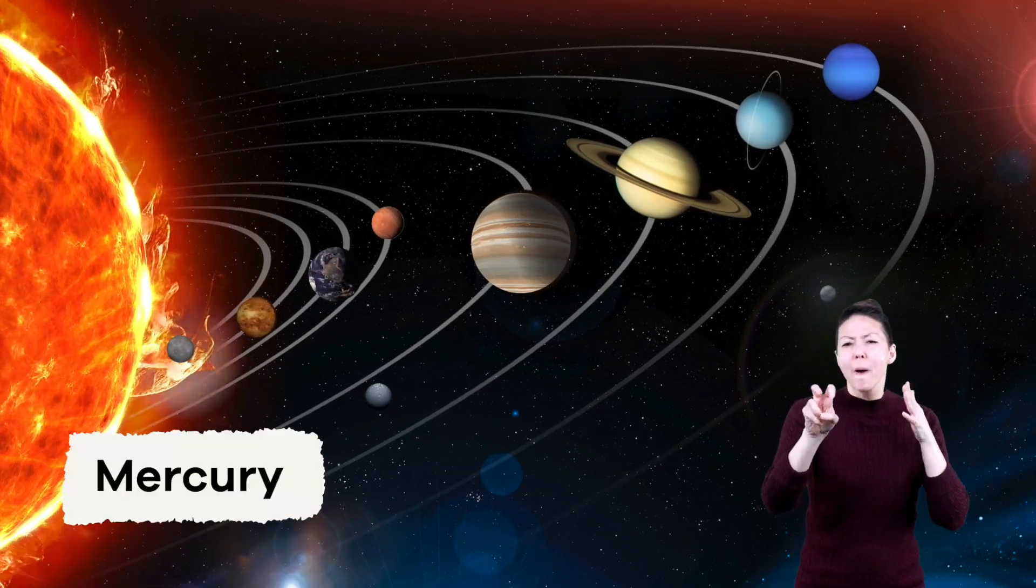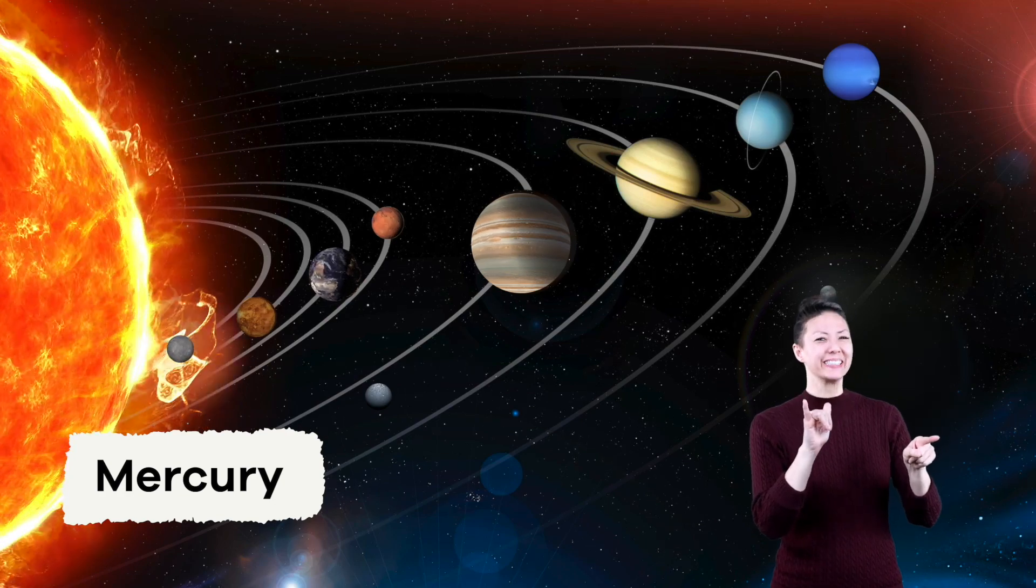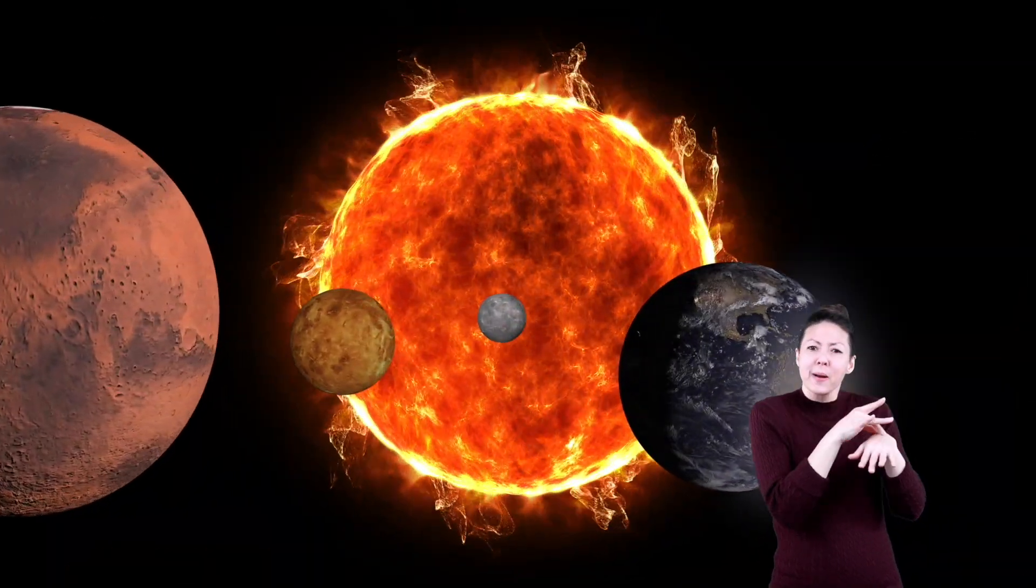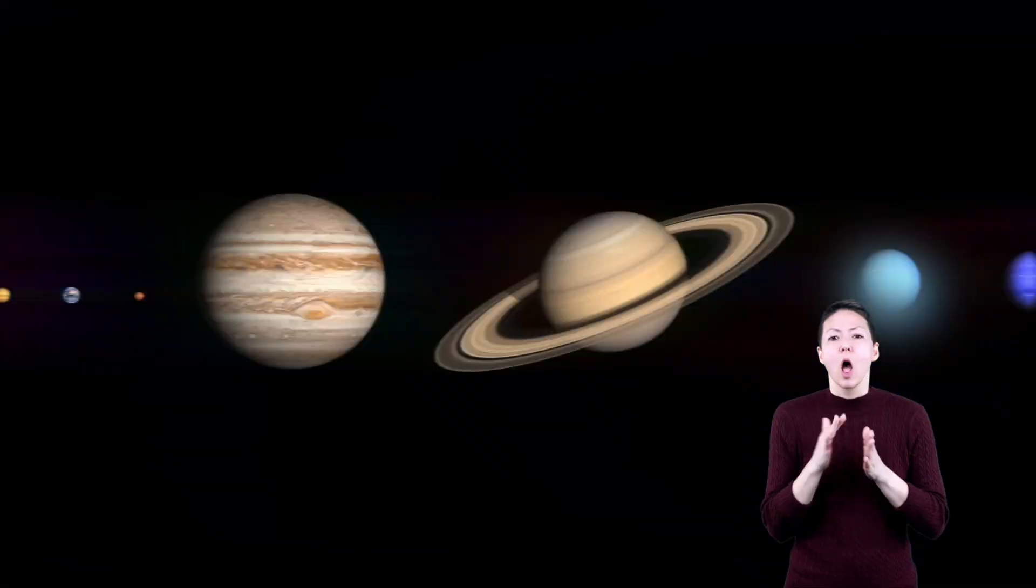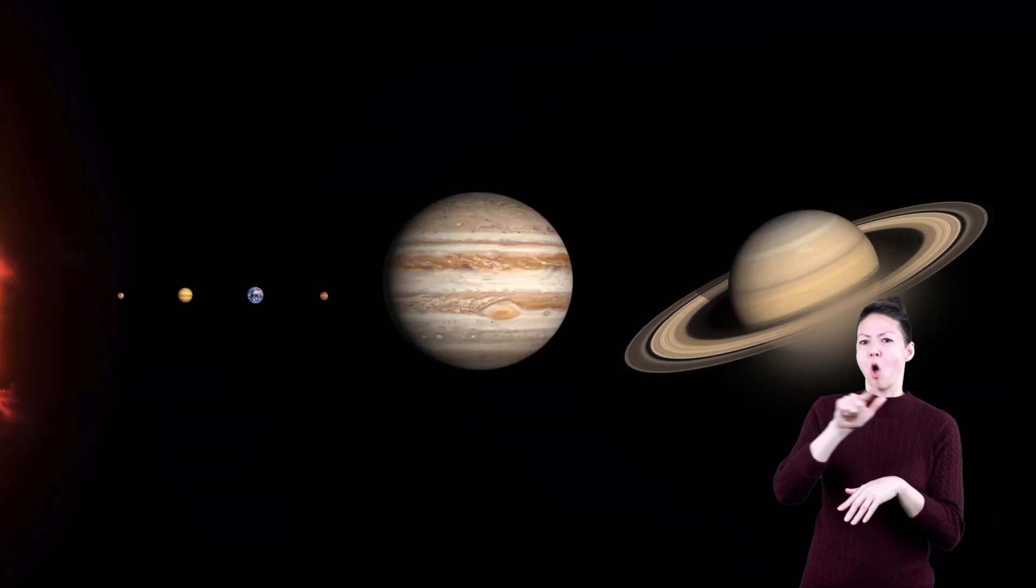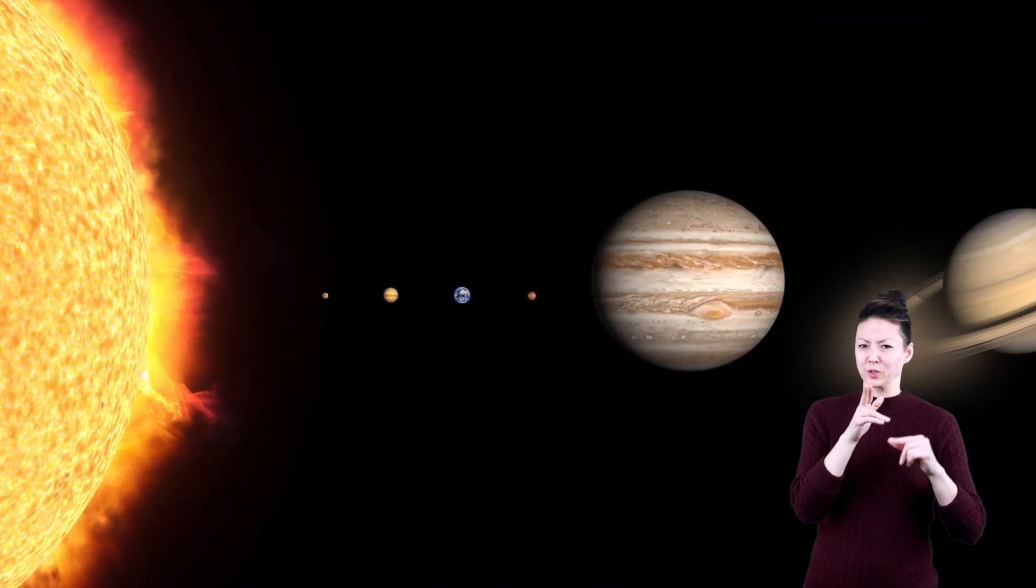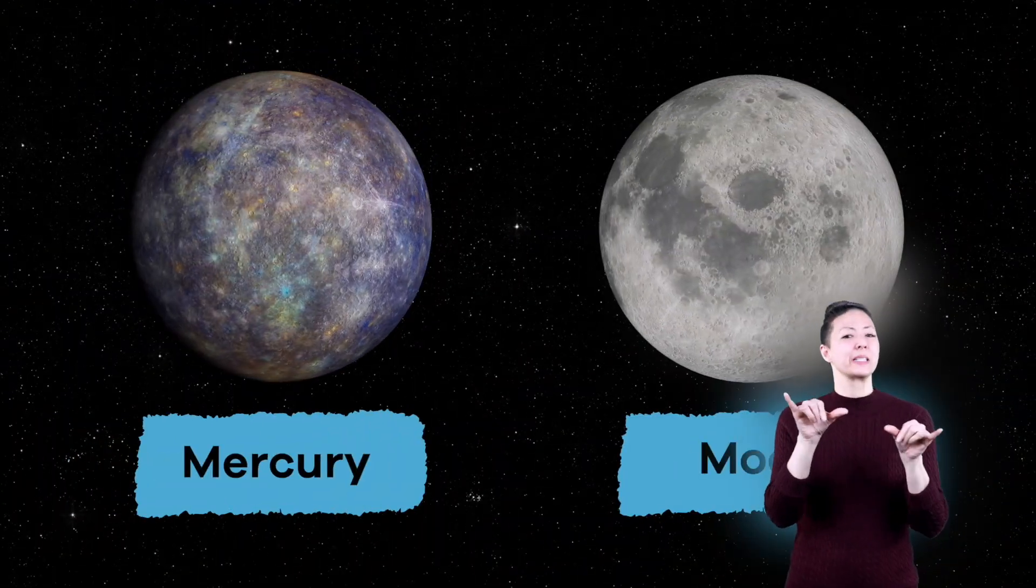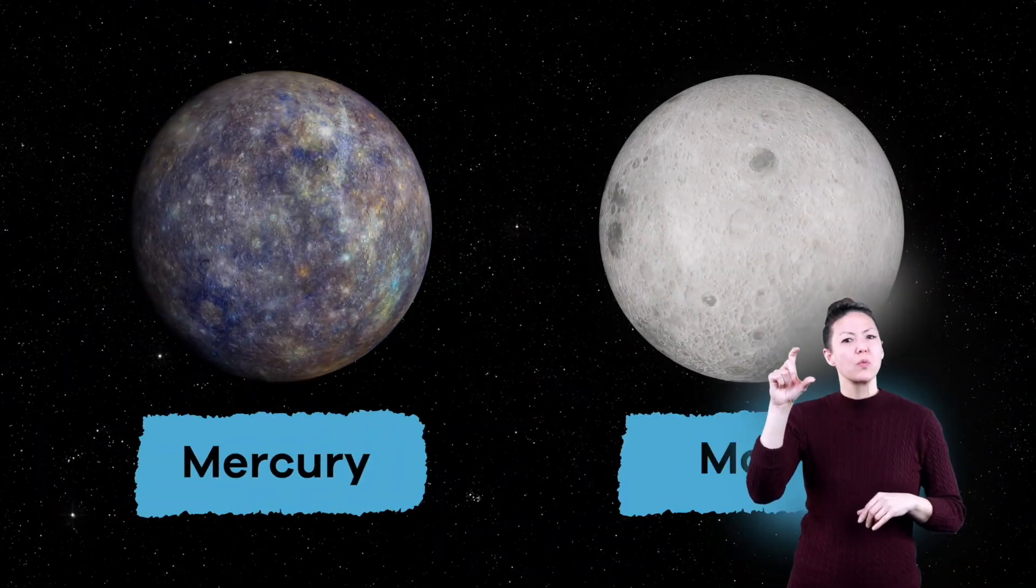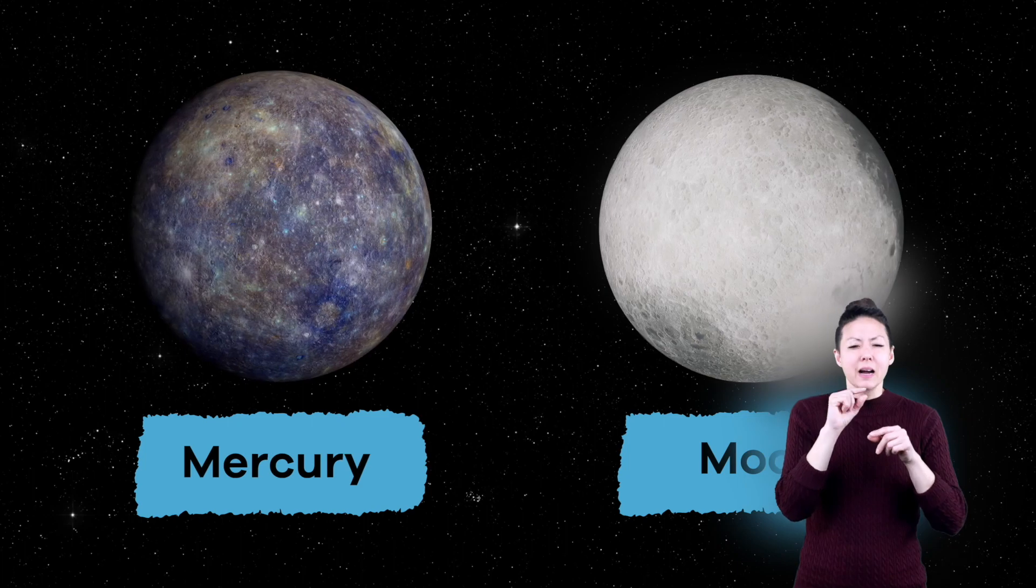Let's take a closer look at each of our eight planets. Our journey begins with Mercury. Mercury is the closest planet to the Sun. It is also the smallest of the eight planets. It's about the same size as the Moon and has very little atmosphere.